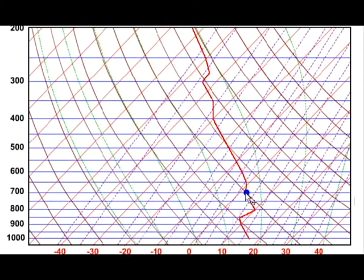So this parcel has a pressure of 700 millibars. Its temperature, here's the 0C isotherm, so it's a little bit to the right. So maybe let's say 3C. And let's lift that parcel up to 500 millibars.